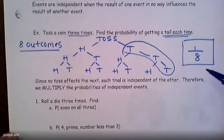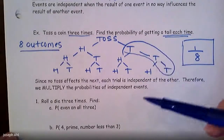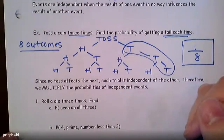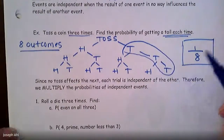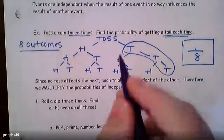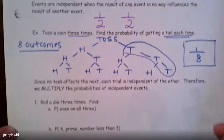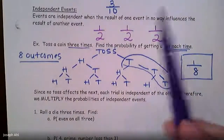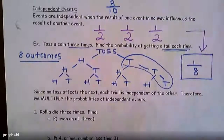The question is: how could I have determined that without making a tree diagram? What if I wanted to toss the coin 10 times and get tails all 10 times? I don't want to make a tree diagram branching all the way to 10 tosses. Think about it this way: what is the probability of getting tails at each step? Since these events are independent, the probability of getting tails on the first toss is one half, on the second toss still one half, and on the third toss one half again. What can I do with those three probabilities to come up with an answer of one eighth?